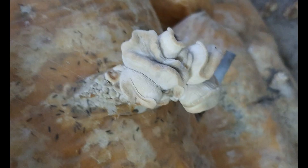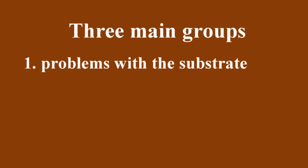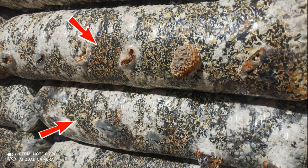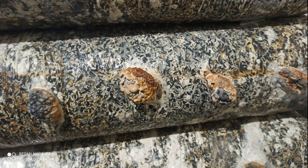We can divide the reasons why oyster mushrooms change their shape or color into three main groups. The first group is problems with the substrate itself. For example, if it was too wet during preparation, or if it got moldy or contaminated with bacterial spots, usually such substrate won't produce mushrooms at all. But if it does, the mushrooms are often yellowish and won't develop properly. These yellow mushrooms can actually be considered sick.